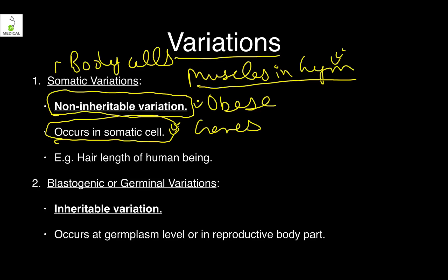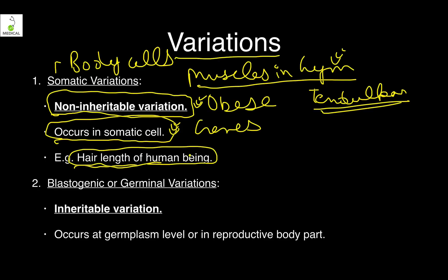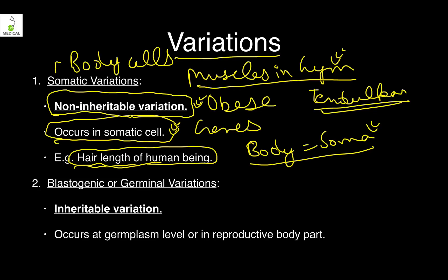These are non-inheritable variations. For example, if your father is Sachin Tendulkar and the best cricketer in the world, it does not mean his son will automatically become a cricketer. Similarly, hair length or being a guitarist — these changes in body cells, soma meaning body, are not transmitted from parents to offspring. Somatic variations are non-inheritable.